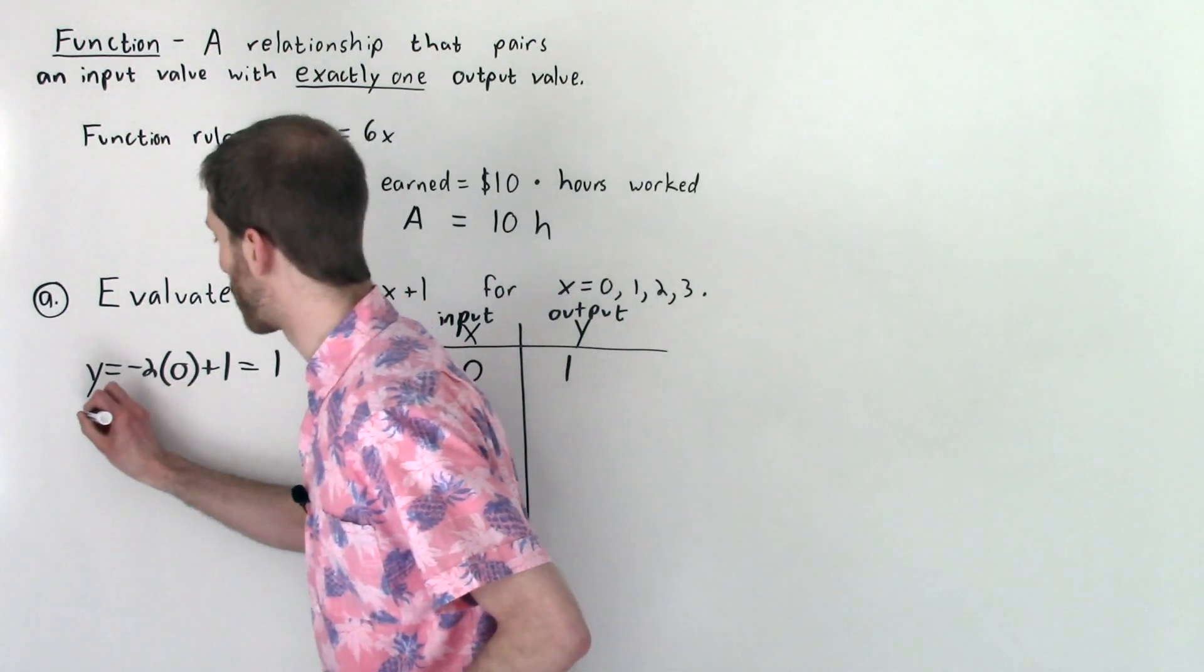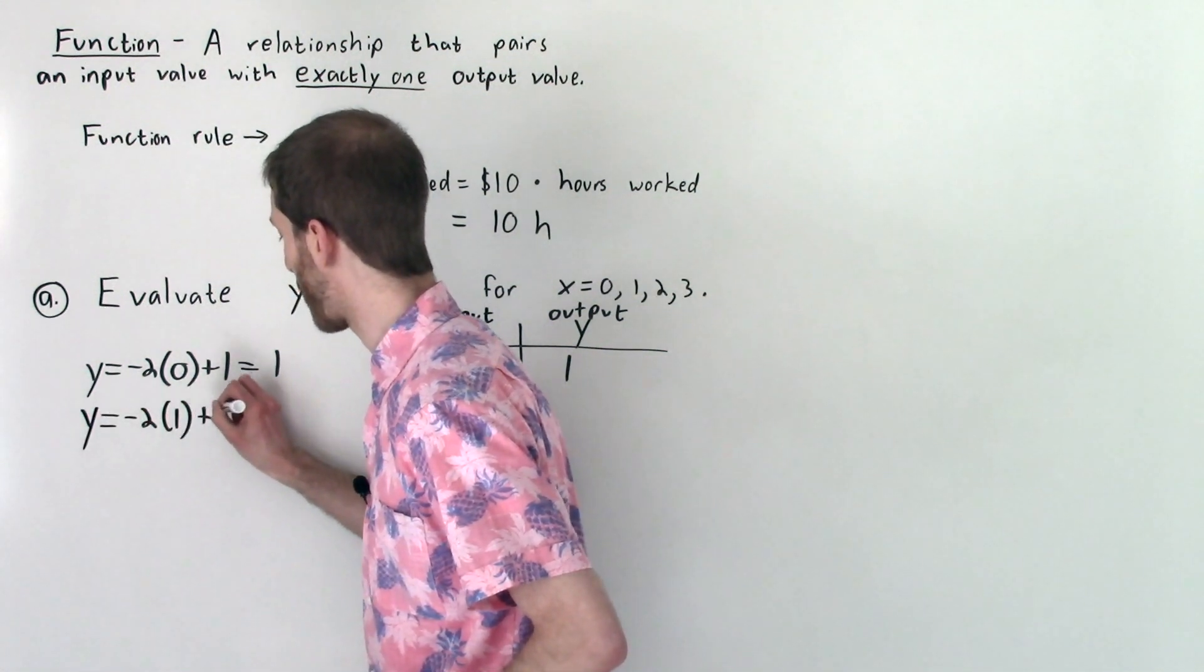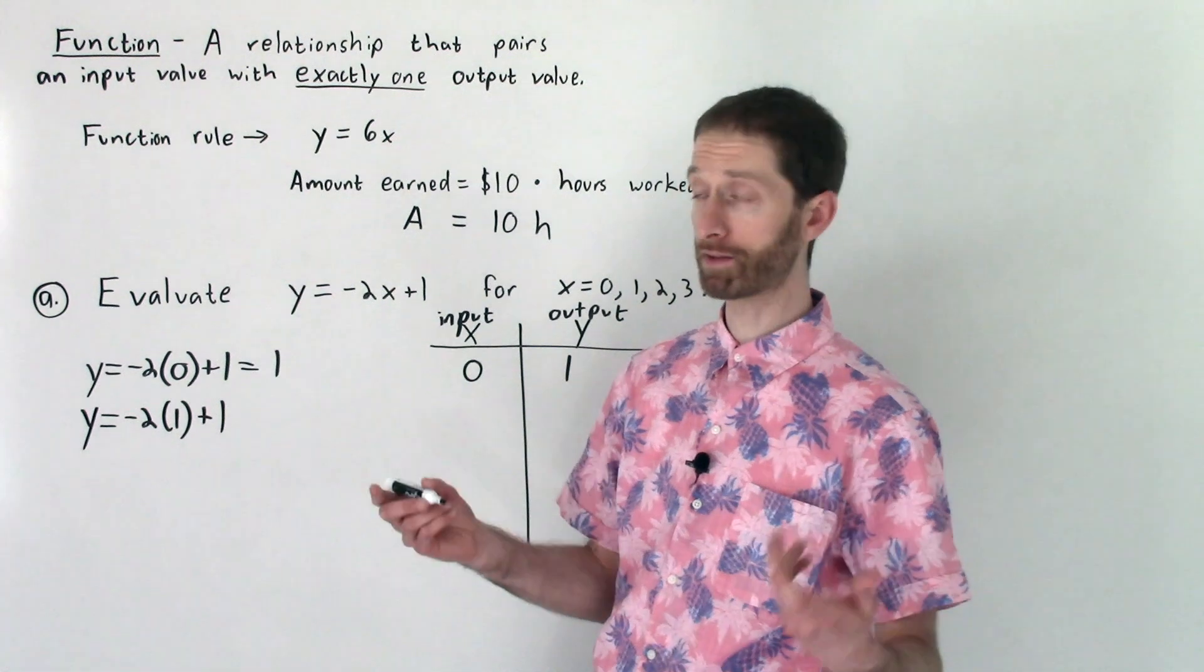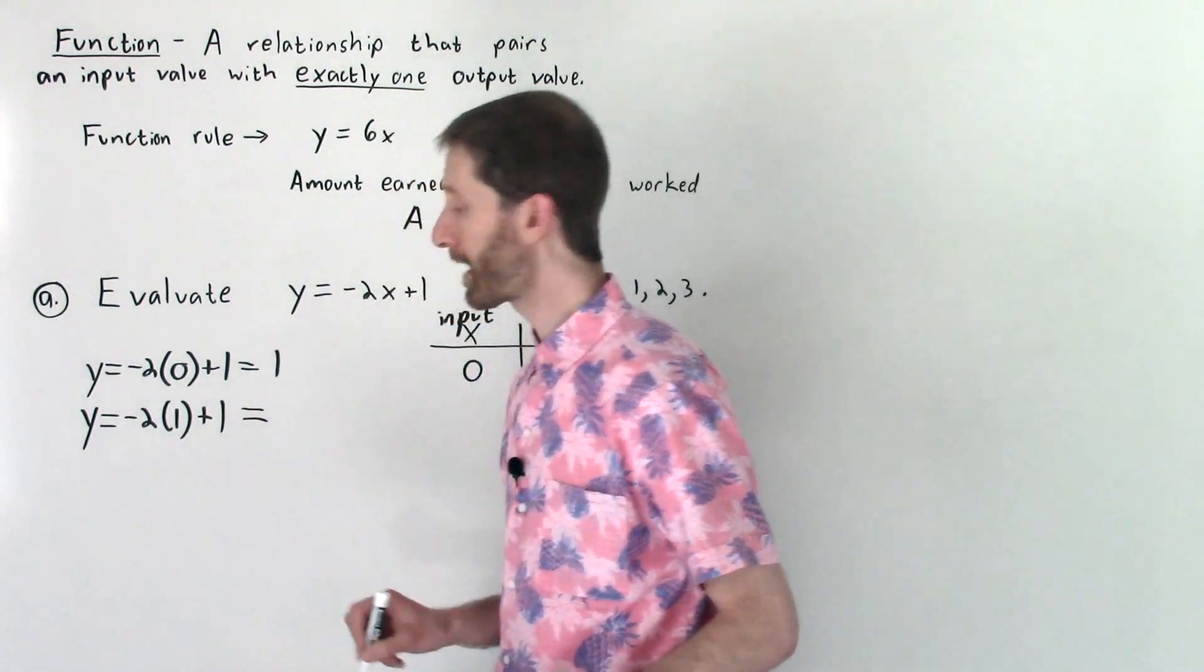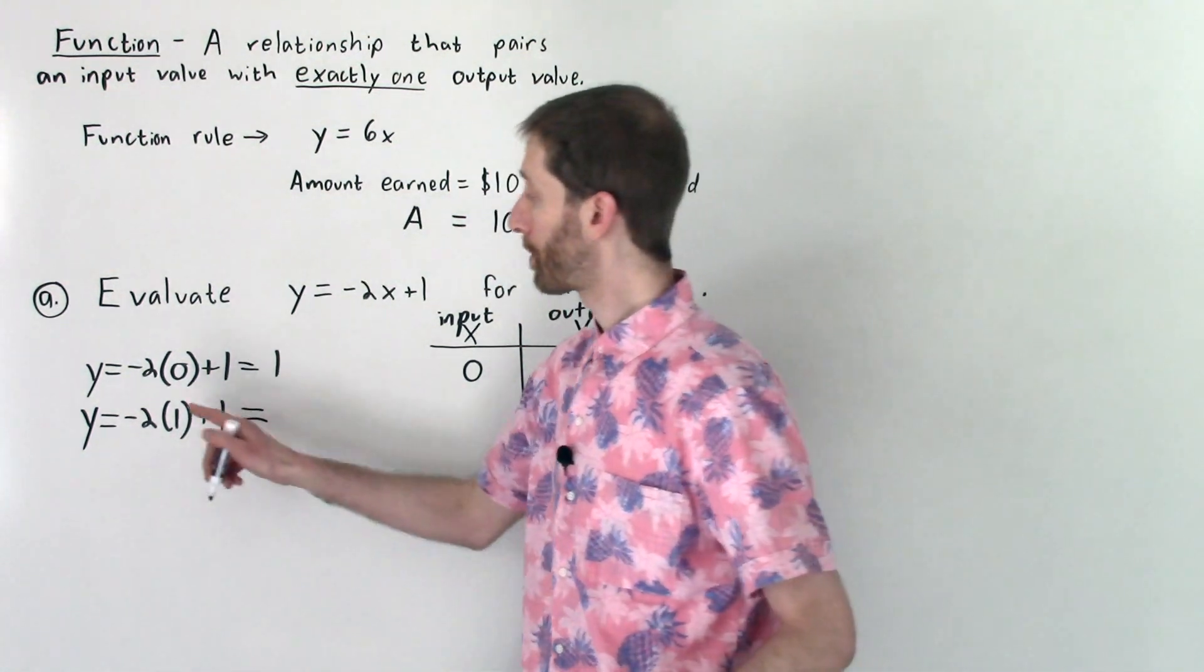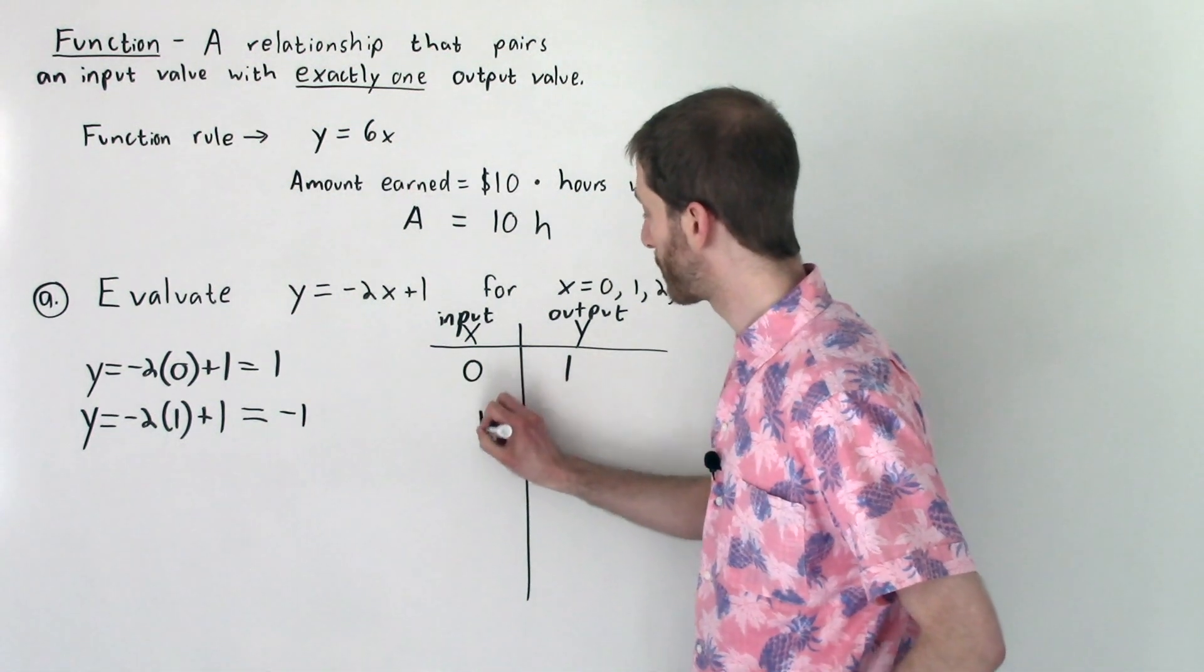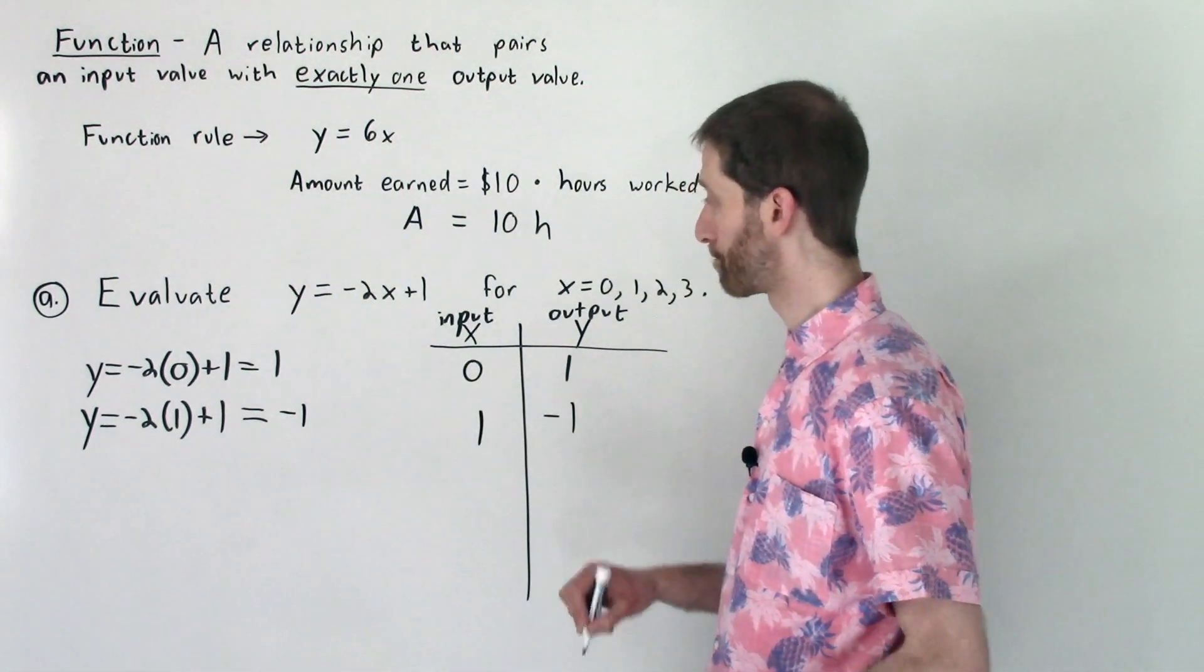We're going to do the same thing now for 1. y equals negative 2 times 1. We're going to add 1 to that because that is what the rule tells us to do. We simplify now using the order of operations. Negative 2 times 1 is negative 2 plus 1 is negative 1. So I input 1 and my output was negative 1.